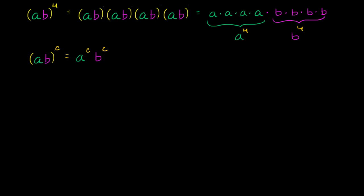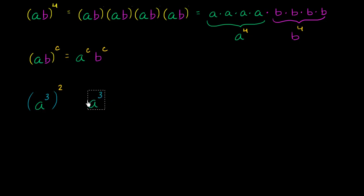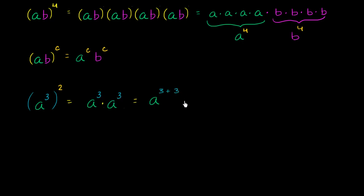Now let me introduce another core idea: raising something to some power — I'll use the example of three — and then raising that to another power. What could this be simplified as? Well, a to the third raised to the second power is the same thing as a to the third times a to the third. And a to the third times a to the third equals a to the three plus three power, which is a to the sixth power.